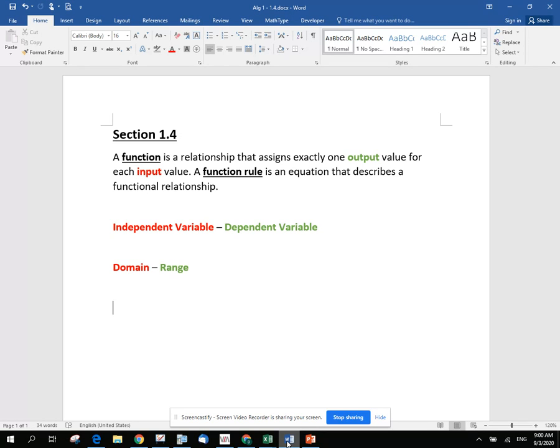I'm going to talk about functions today. A function, here's the definition: a function is a relationship that assigns exactly one output value for each input value. So it's a relationship between two variables, of course in algebra. And the next definition, a function rule is an equation that describes a functional relationship.